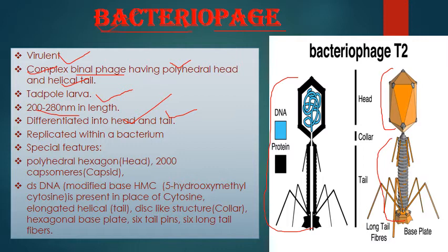Bacteriophages replicate and multiply within the bacterium only — they multiply inside the bacteria. There are two types of multiplication procedures, which we will study in detail: one is the lytic cycle, and the other is the lysogenic cycle.